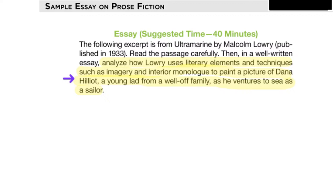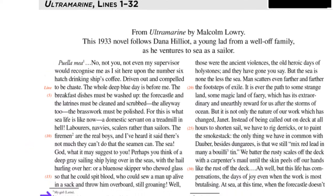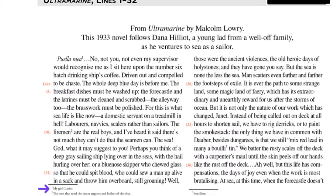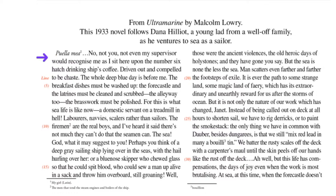The prompt really wants you to give a kind of character sketch — who is Dana Hilliott, what do we know about him, and how do we know these things from the author's use of literary devices? There's a foreign language reference at the top, 'Puella Mea,' with a footnote saying 'my girl' — so we know he's writing to a girl. The narrator says no one, 'not even my supervisor would recognize me as I sit here upon the number six hatch drinking ship's coffee.' He's out at sea and describes his everyday life — washing dishes, cleaning the forecastle and latrines. 'For this is what sea life is like now.'